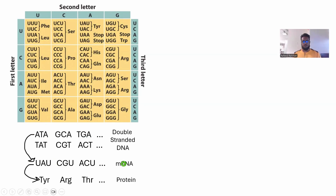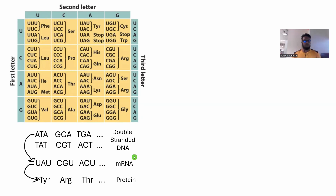suppose it transforms itself into mRNA — messenger RNA — through a process called transcription. I covered this in part 5. We all know that A will convert to T, but there is no T in RNA, so it will ultimately be U, which is uracil. T will convert to A, A will convert to U again, G will convert to C and so on and so forth.